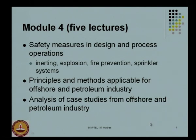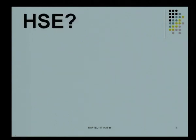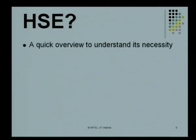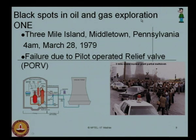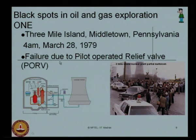Dear friends, this HSE course is designed to cover in 4 modules as explained before. Let us ask a question: what is HSE? A quick review to understand its necessity. There are some black spots in oil and gas exploration. Black spot number one happened in Three Mile Island, Middletown, Pennsylvania on March 28, 1979. The failure was mainly due to the pilot-operated relief valve which caused an explosion on the cooling tower.